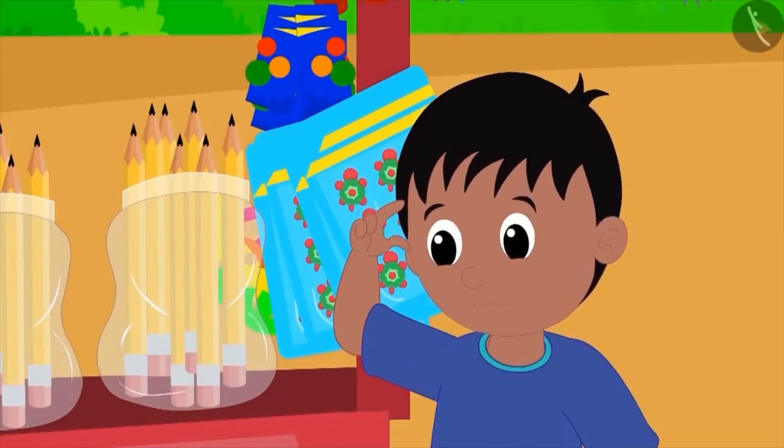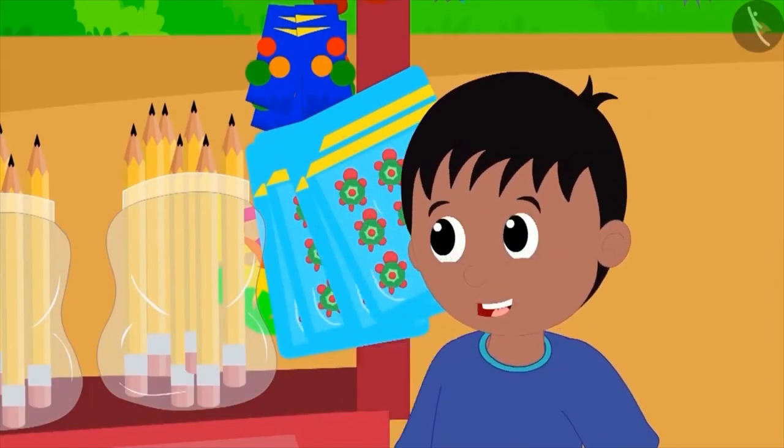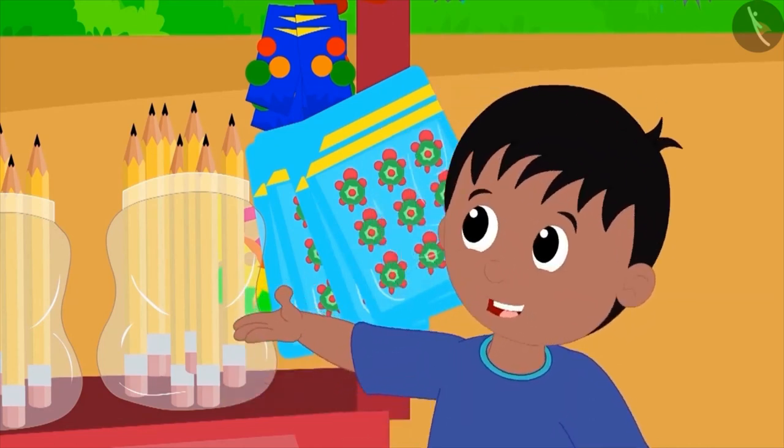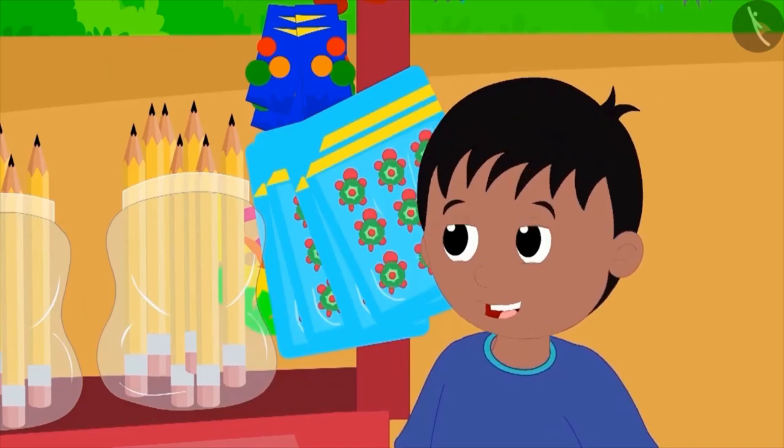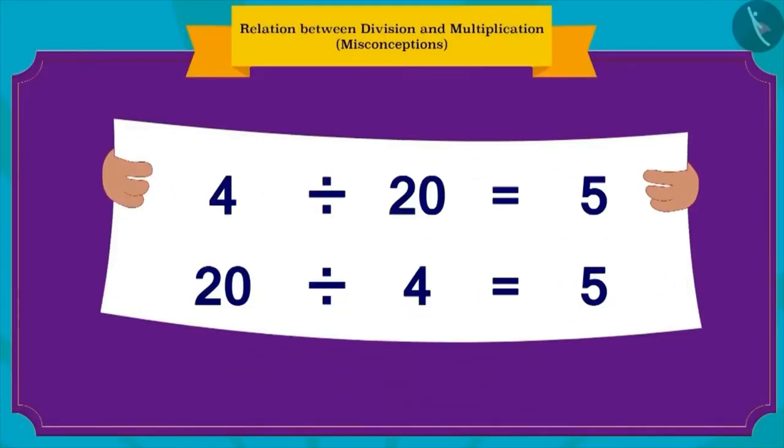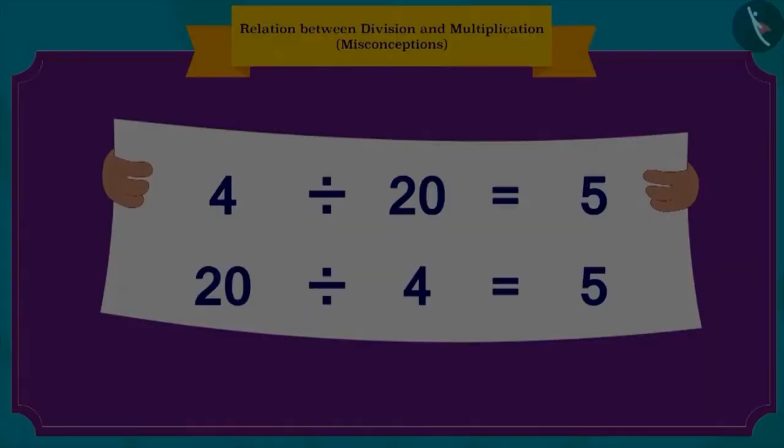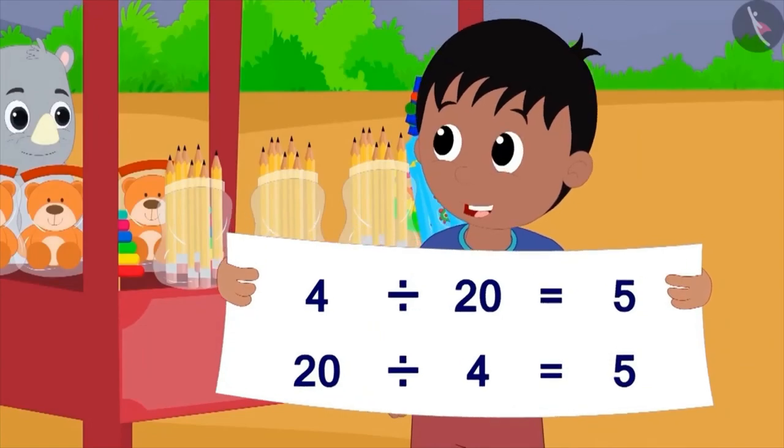Then Raju thought that he can also write division in two ways because of the relation between division and multiplication. Therefore, after writing division like this, he happily told Bablu that he had become an expert in maths.